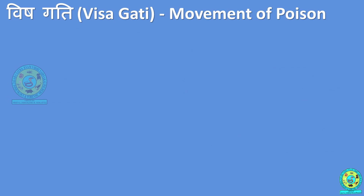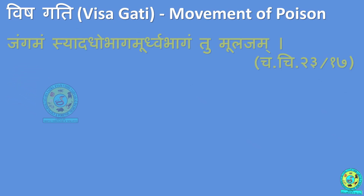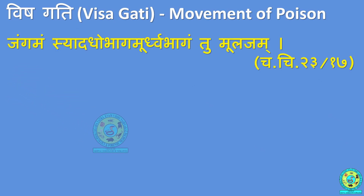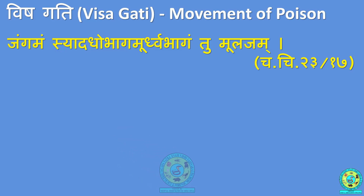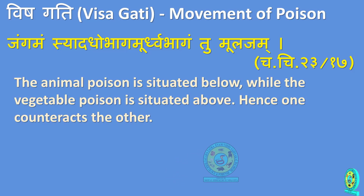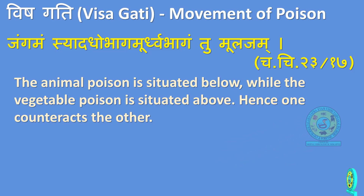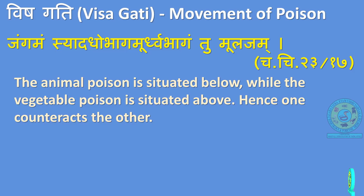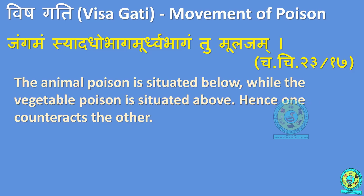Now coming to Vishagati, or the movement of poison. Reference Charaka Chikitsa Sthana Chapter 23 Shloka 17: 'Jangamam syad adobhagam, urdvabhagam tu mulajam.' The direction of Jangamavisham is adobhagam (downward), while Sthavaravisham is urdvabhagam (upward). Therefore, they are counteracting or opposite to each other.